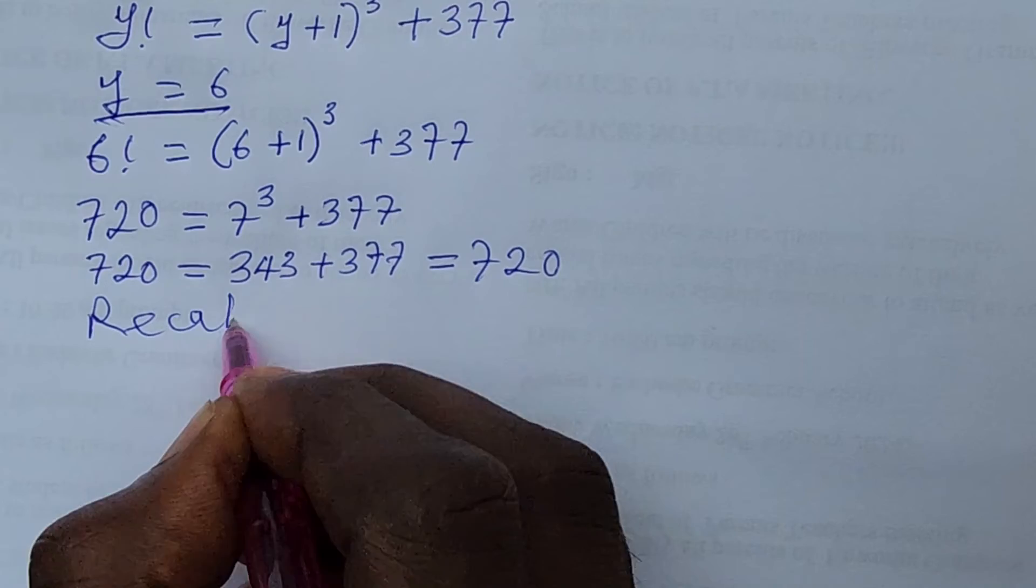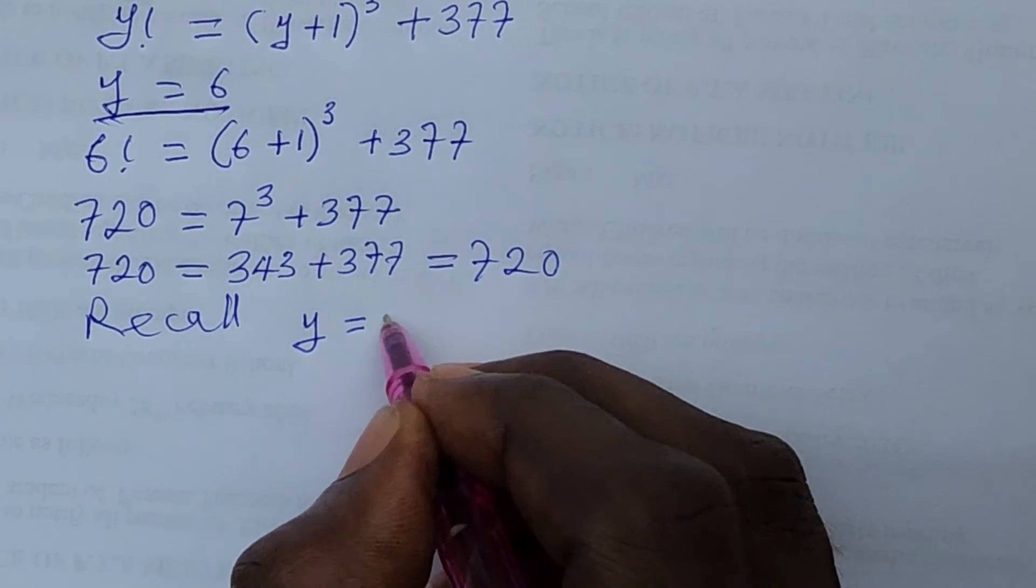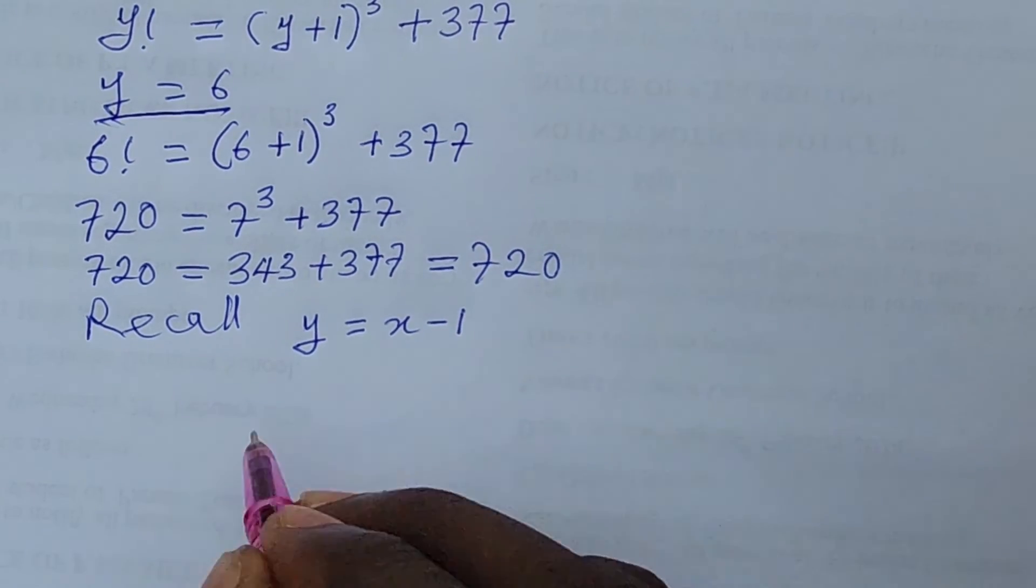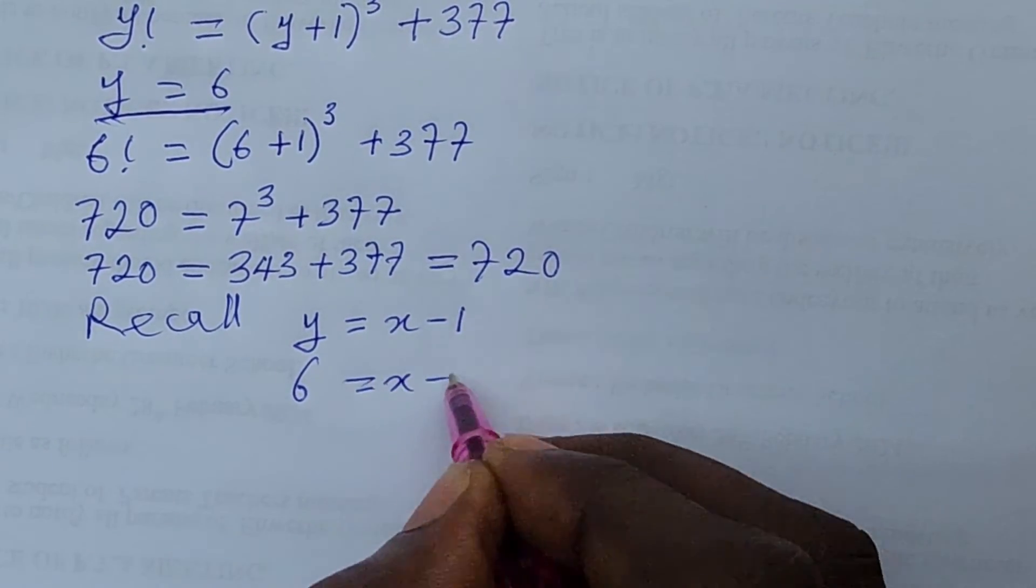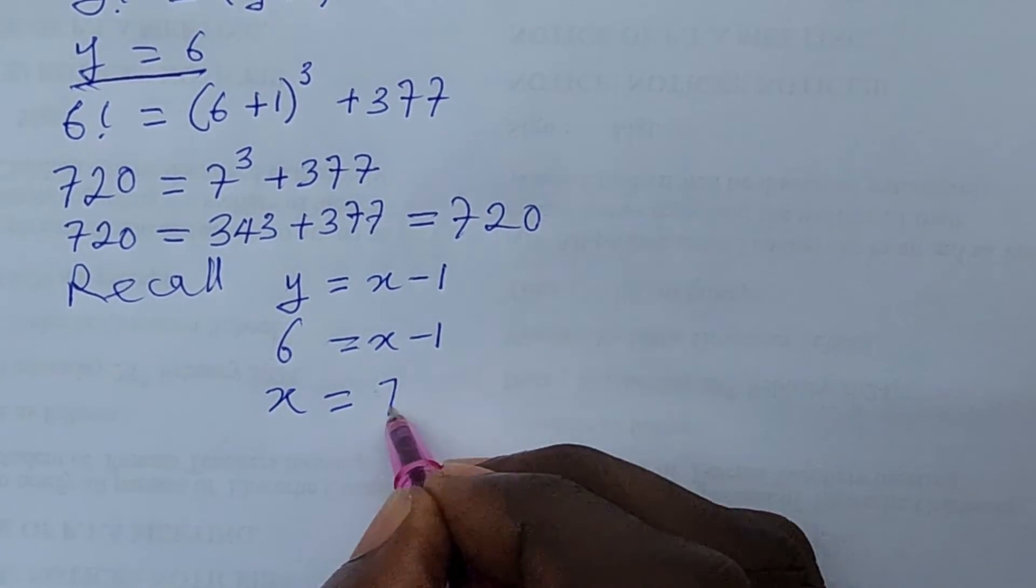So we have to recall that our y is equal to your x minus 1. So we solve this to be 6. So we have this to be minus 1. Therefore our x will now be equal to 7.